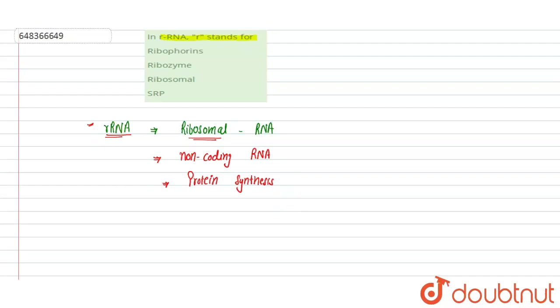So here we can say that this r represents ribosomal, ribosomal RNA or ribonucleic acid. Options here, we will see.